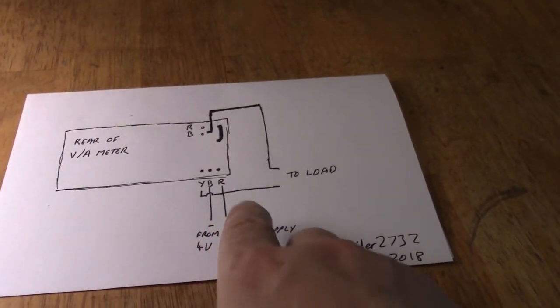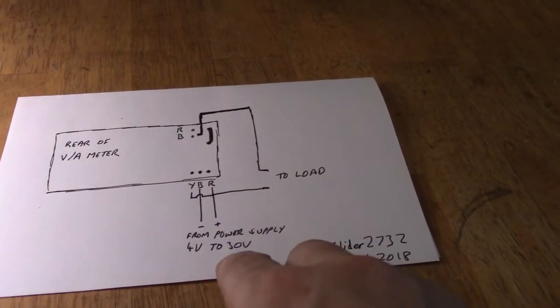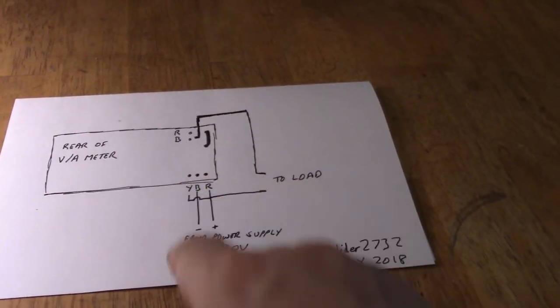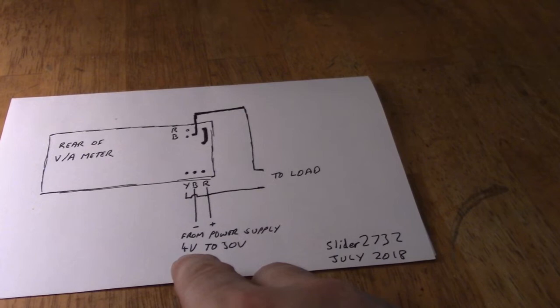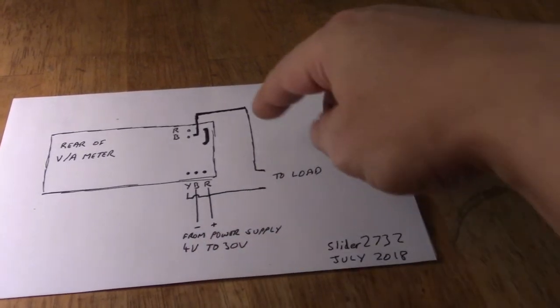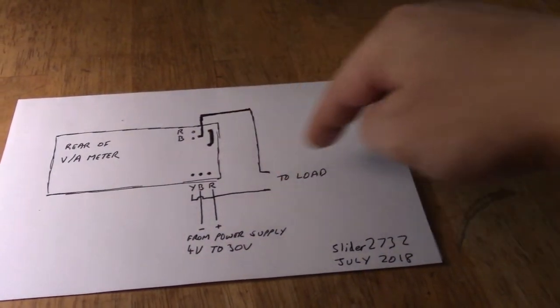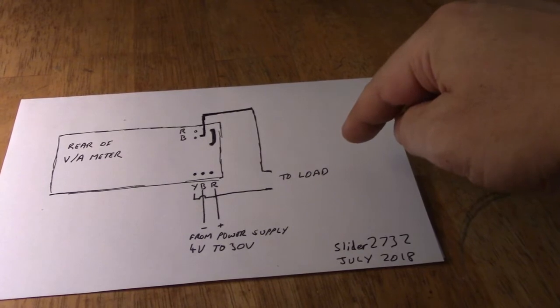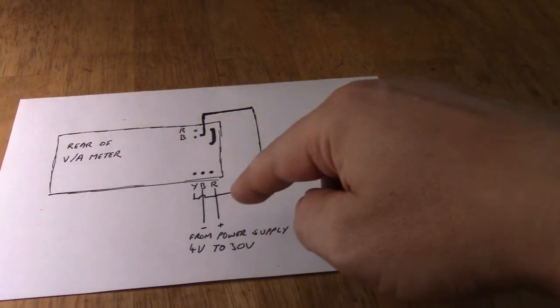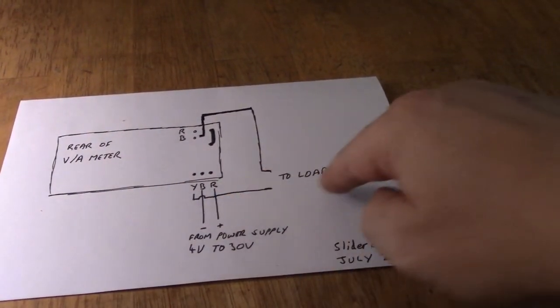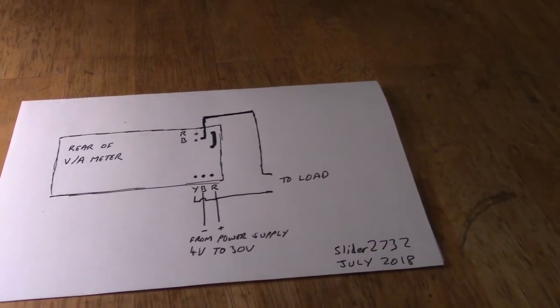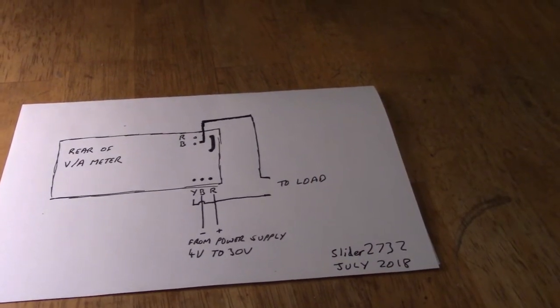The yellow and the red get connected together and they are the input from your power supply. The black is the input ground from your power supply. For the output you have the bottom one, the black, which forms the ground to your load, and you have the red, well yellow and red, as the output positive to the load, and then the voltage and the current will work.